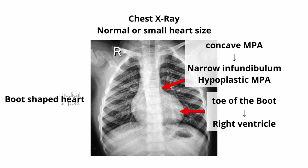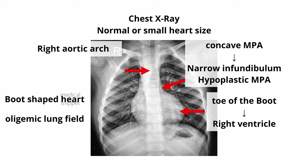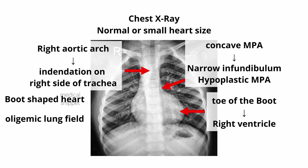This sign is accentuated by a large lung volume and a small thymus. When a normal thymus is present, the left lobe of the thymus may obscure the concave pulmonary artery sign. Other findings include oligemic lung fields, and a right aortic arch can be seen as an indentation on the right side of the trachea.